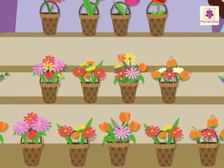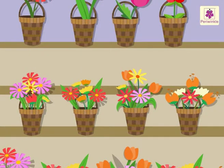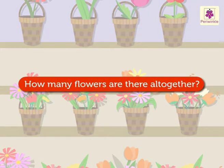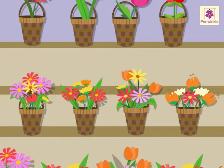Look here. There are four baskets. Each basket contains six flowers. How many flowers are there altogether? Four into six is equal to twenty-four. So, there are twenty-four flowers.